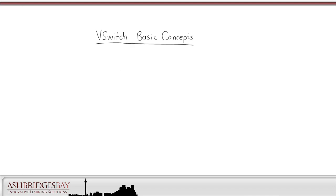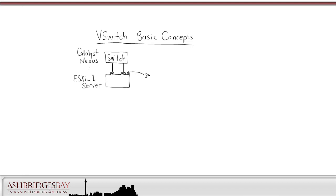Let's start with basic vSwitch concepts. Here we have a switch — a Catalyst or Nexus switch, or any other kind of switch. A server running ESXi is connected to the switch. The ESXi server has two Ethernet ports which we call server uplinks. Inside the ESXi server is a vSwitch. The vSwitch also has uplinks which we call VMNICs. The VMNICs are connected to the ESXi server uplinks.